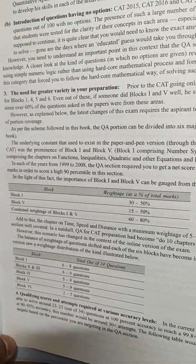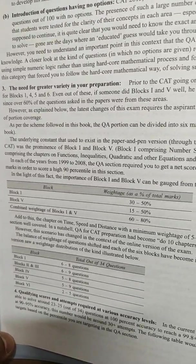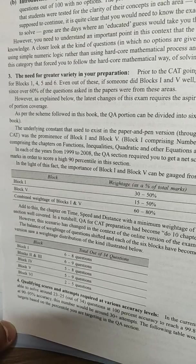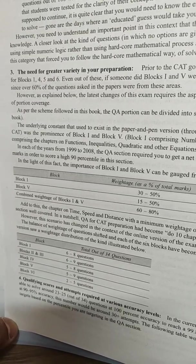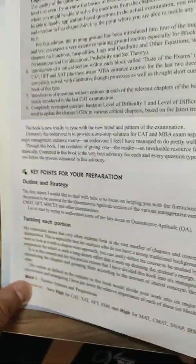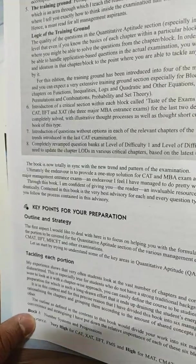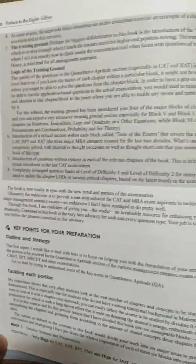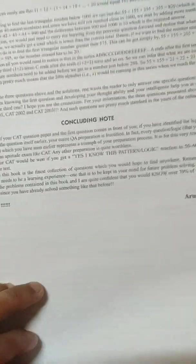These are the various weightages. As you can see, Block 1 is 30 to 50%, Block 2 and Block 5 are 15 to 50%. These are various other weightages and key points. In this, the author says how to prepare for CAT using this book, very helpful.